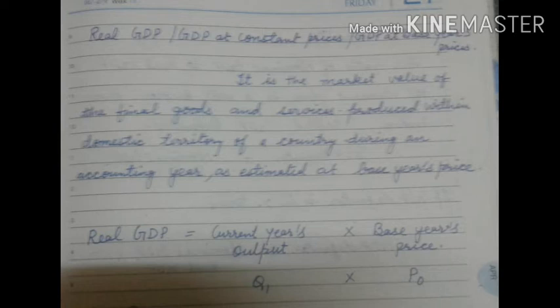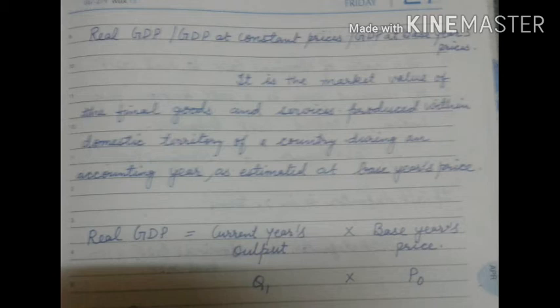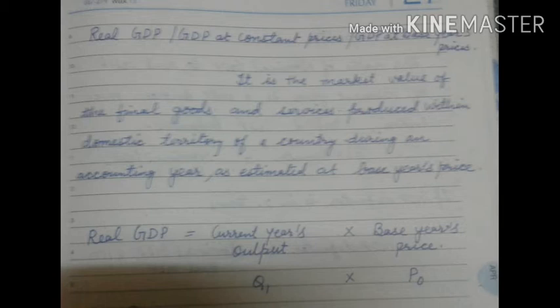The formula is: Real GDP = Current year's output (Q1) × Base year's price (P0). It means we multiply the current year's output by the base year's price. Output is always taken from the current year, whether we are calculating real GDP or nominal GDP.